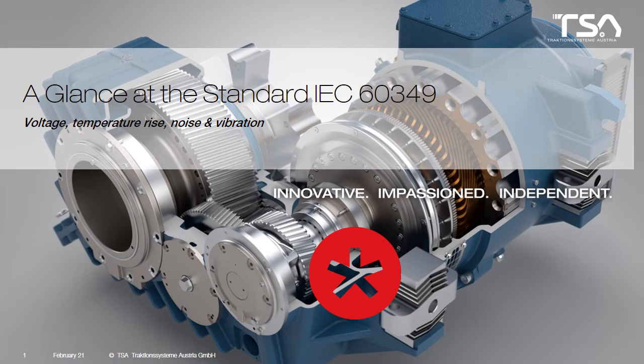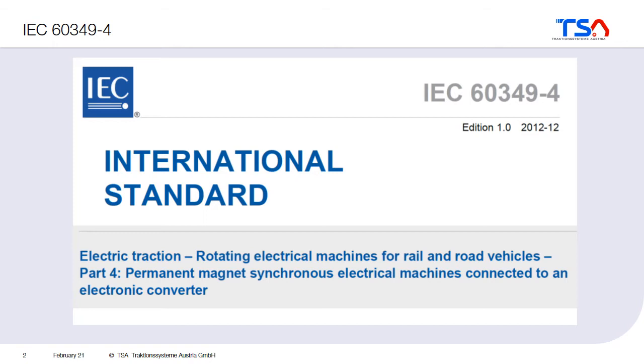In chapter 5 we take a look at the standard 6349. Typically it's not the most fun thing to read a standard, but it can give you some hints about what is important when you manufacture or buy an electric machine. This standard is valid for electric traction — for rotating electrical machines for rail and road vehicles — and especially part number 4, which is valid for permanent magnet synchronous machines.